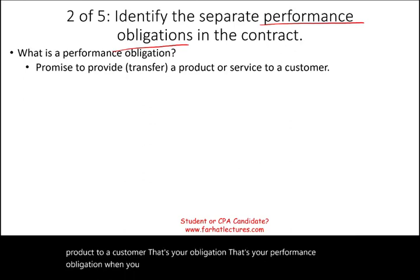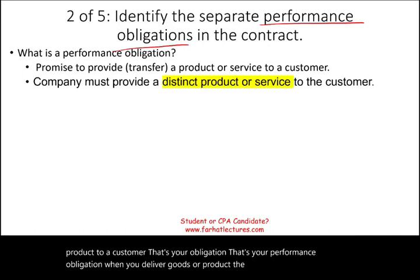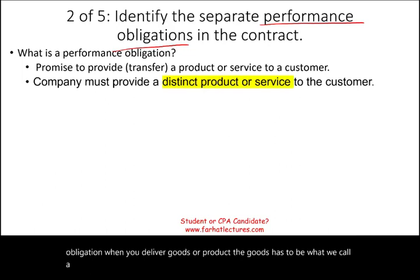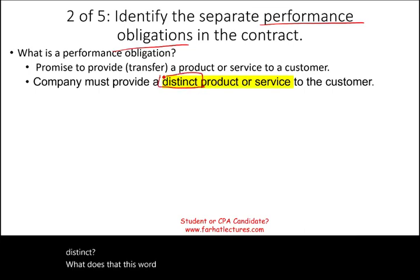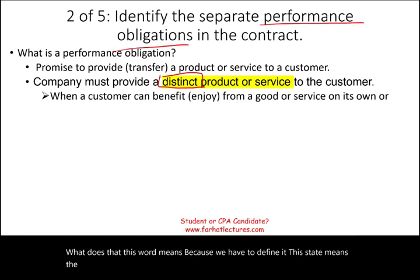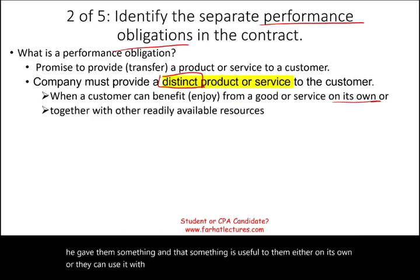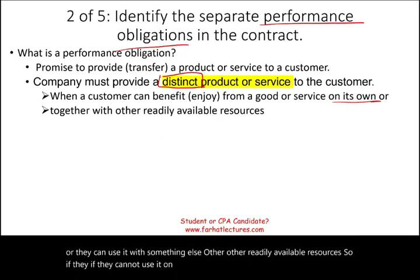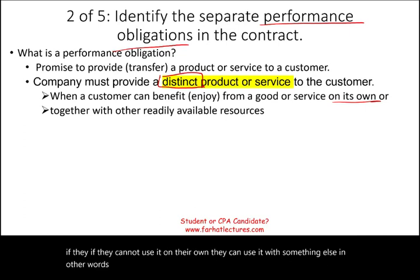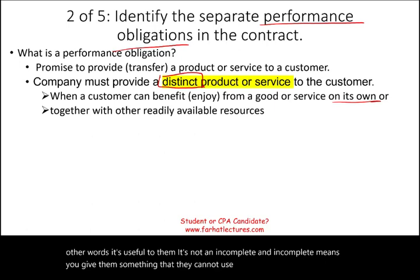When you deliver goods or a product, the goods have to be what we call a distinct service — a distinct product or service. What do we mean by distinct? Distinct means the customer can enjoy the product, can benefit from the product on its own. You gave them something that is useful to them either on its own, or they can use it with other readily available resources. If they cannot use it on their own, they can use it with something else. In other words, it's useful to them — it's not incomplete. An incomplete means you give them something they cannot use.